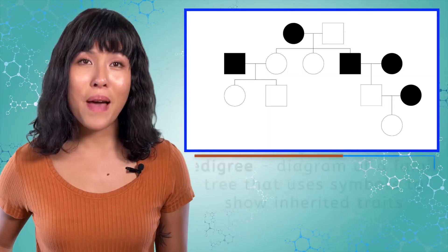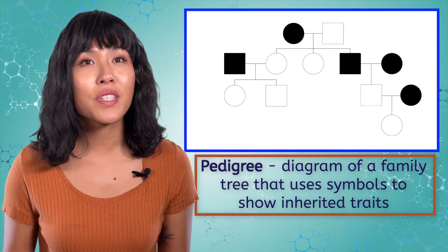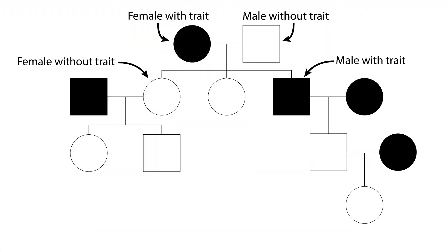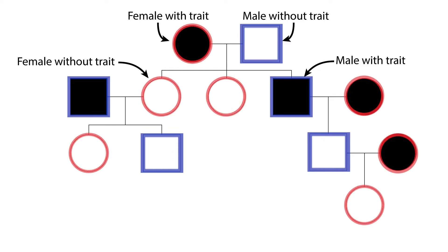When scientists want to use a family tree to investigate an inherited trait, we call it a pedigree. And instead of using pictures, we use symbols to keep things a little simpler. Males are indicated with a square and females with a circle. If the shape is a solid color, the individual has the trait being investigated. An empty square or circle indicates that the person does not have the trait.